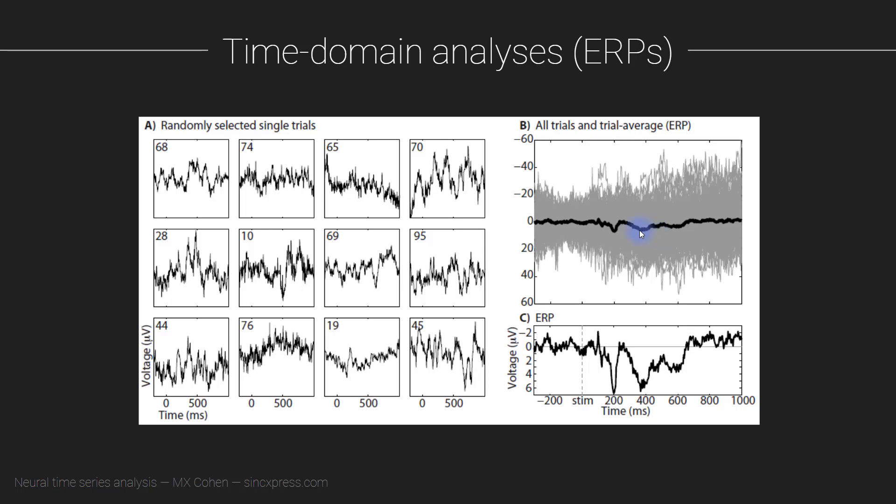So what do you notice about the relationship between the event related potential and the single trial voltage fluctuations? What you've probably noticed is that it's quite a bit smaller. The ERP tends to be around an order of magnitude smaller than the single trial variability. That's not by some mathematical necessity. That's just empirically that tends to be the relationship. So why is that the case? Well, there are two reasons. One, that part of this variability is noise. And so that's why it's useful to average across trials. And part of the reason is that there is variability in the single trial data that is lost in the ERP averaging.